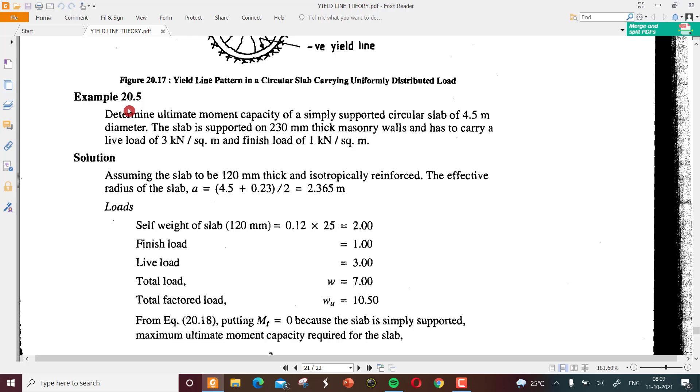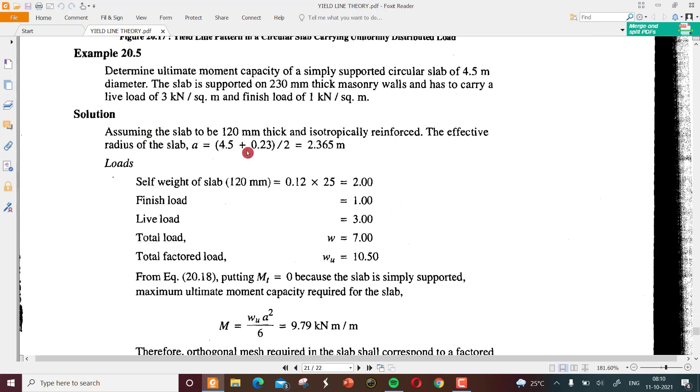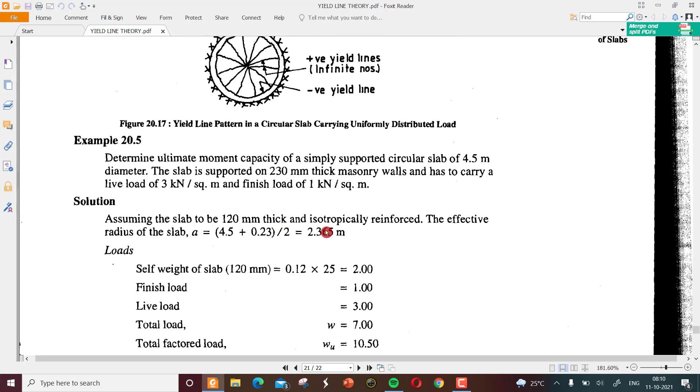Example 20.5: Determine the ultimate moment capacity of a simply supported circular slab of 4.5 meter diameter. The slab is supported on 230mm thick masonry walls and has to carry a live load of 3 kN per square meter and finished load. We are applying a UDL over the surface of the circular slab, assuming that the slab is 120mm thick and is isotropically reinforced. The effective radius of the slab - we need the depth of slab to find the effective span.